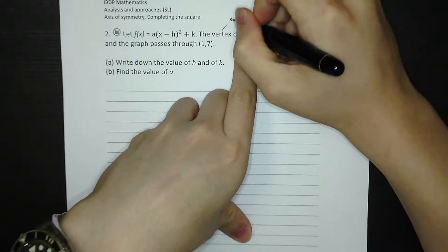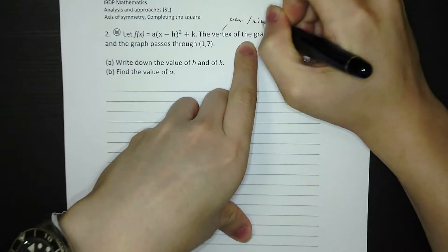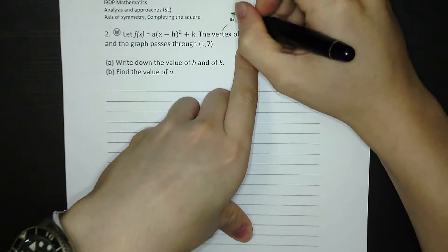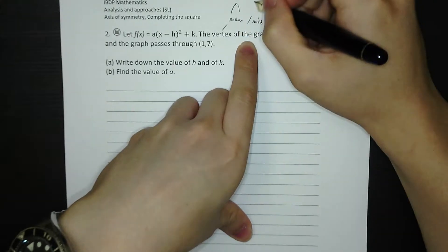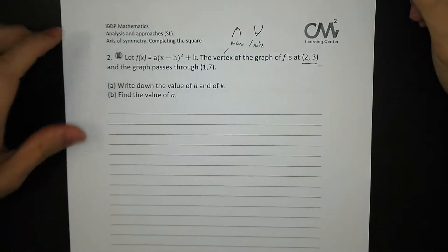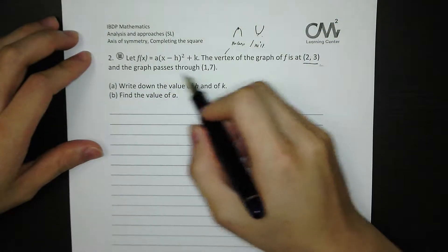The vertex means the maximum point or the minimum point—like at its face, the maximum point, and also the small face, the minimum point. And also the graph passes through 1, 7.